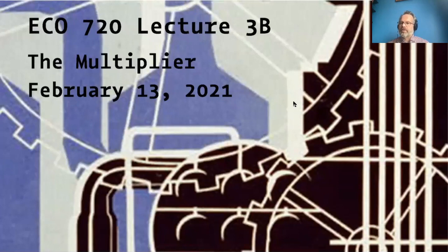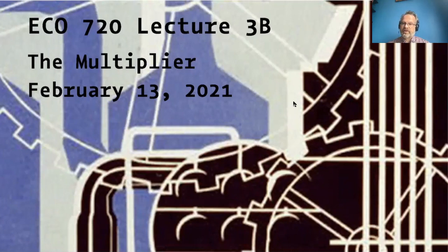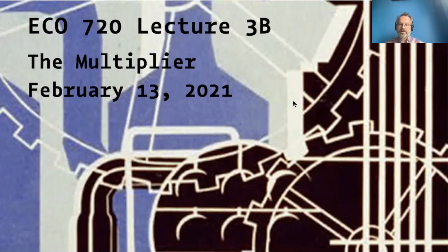The logic of the multiplier applies to changes in demand originating from other sources, like a sudden increase in exports or business investment. The same factors that cause a change in government spending to have a larger or smaller effect on GDP will generally apply to those other sources of demand as well. But the context where the multiplier is most often discussed is a change in the government budget or fiscal position — fiscal referring to anything having to do with the government budget.